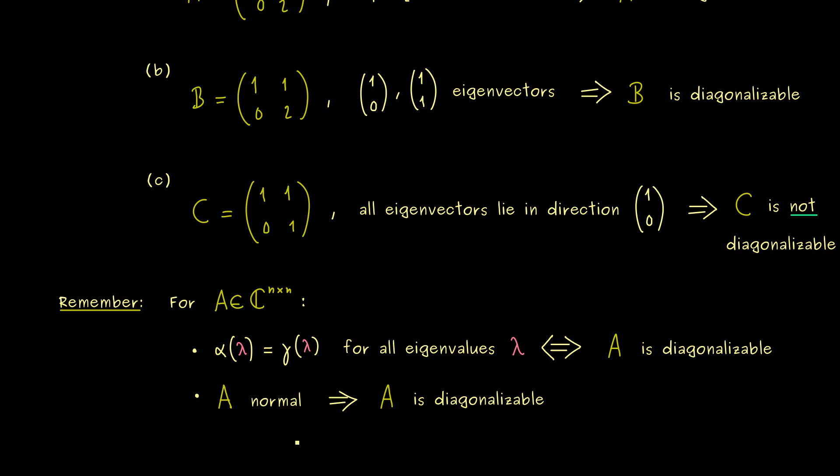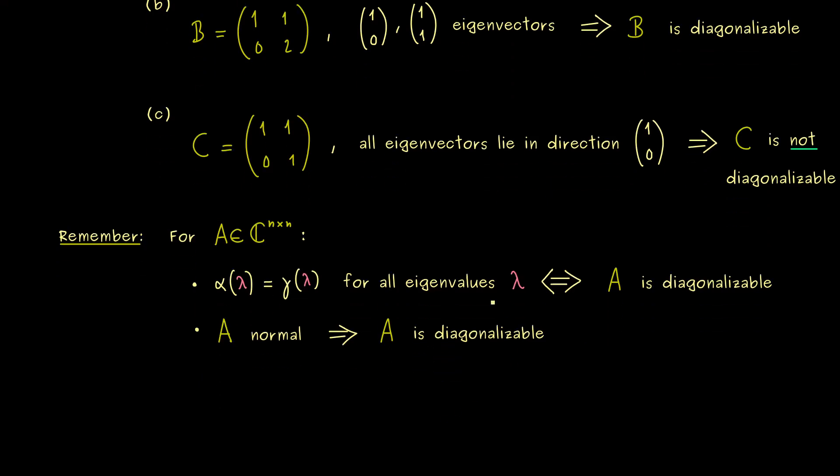Indeed, in this case one knows even more. Namely, one can choose an ONB from the eigenvectors. This is a very special basis. It is a so called orthonormal basis. It means that with respect to the standard inner product, the basis vectors are orthogonal to each other and normalized. So this is a great thing, which is in general not possible, but for normal matrices, it's always possible.